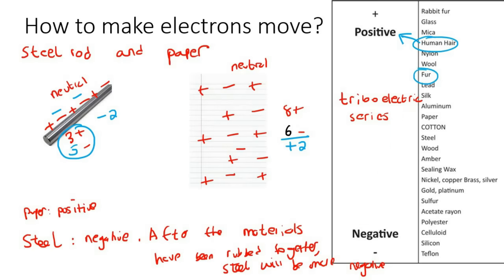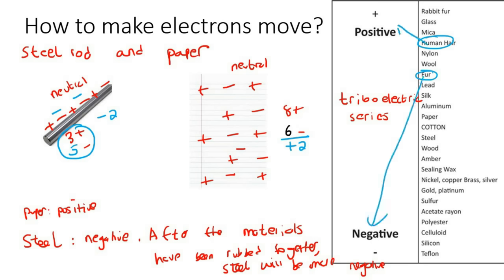They can't both go positive. The one that's lower down always goes to the negative side, and the one that's higher up always goes to the positive side. This is just a really nice table to help you identify what will happen to the electrons when you rub the two materials together.